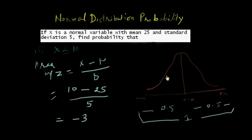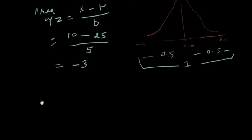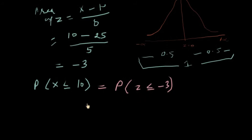Now it is very easy for us to calculate the probability. P is the symbol of probability and we have to calculate P(X ≤ 10), which equals P(Z ≤ -3). Now we will calculate the value corresponding to Z equal to minus 3.